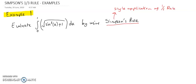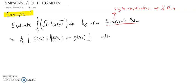The formula is given by h over 3 times f(x0) plus 4f(x1) plus f(x2). The h value is equal to b minus a over 2. So b is 1, a is 0, so h is 0.5.